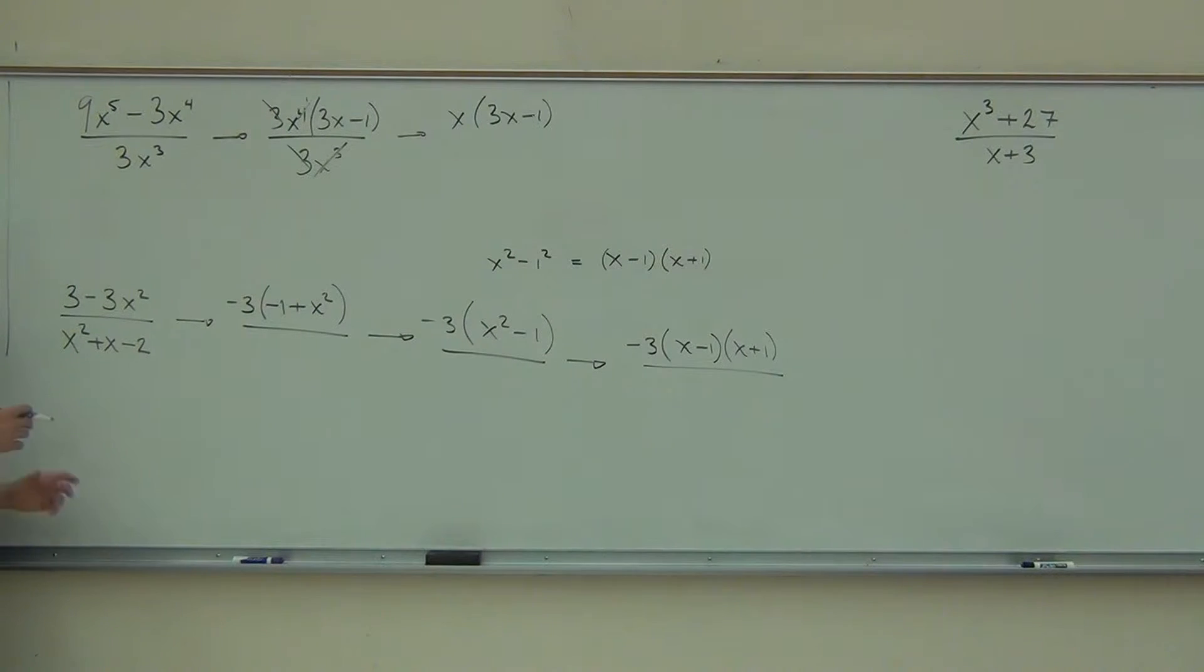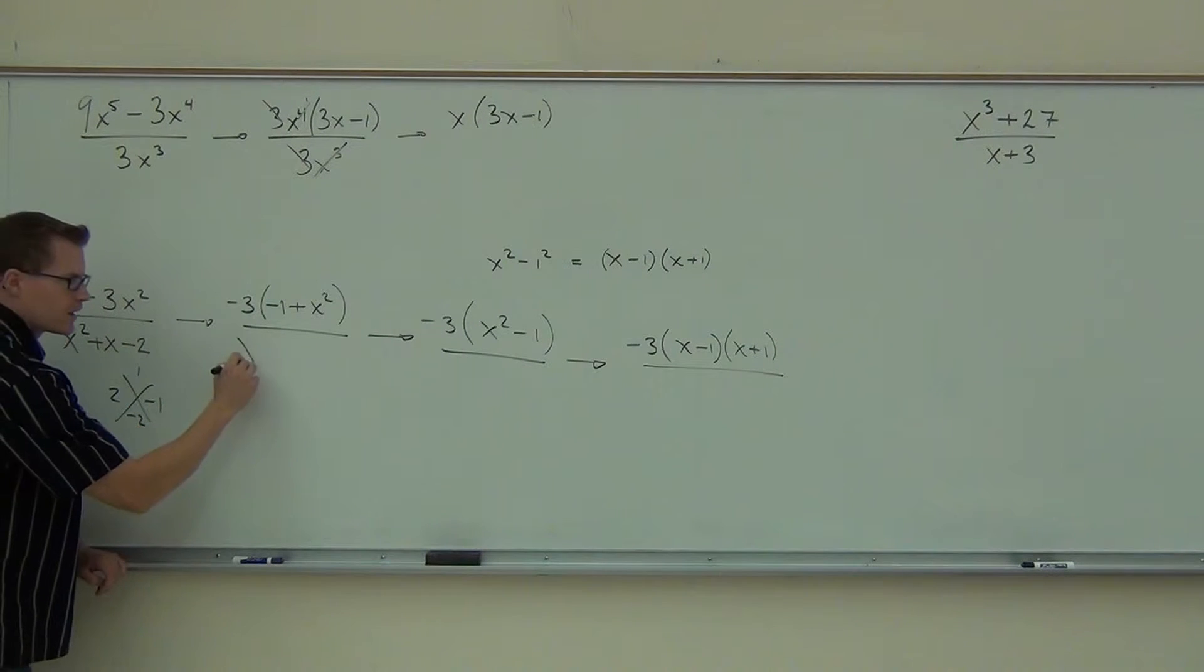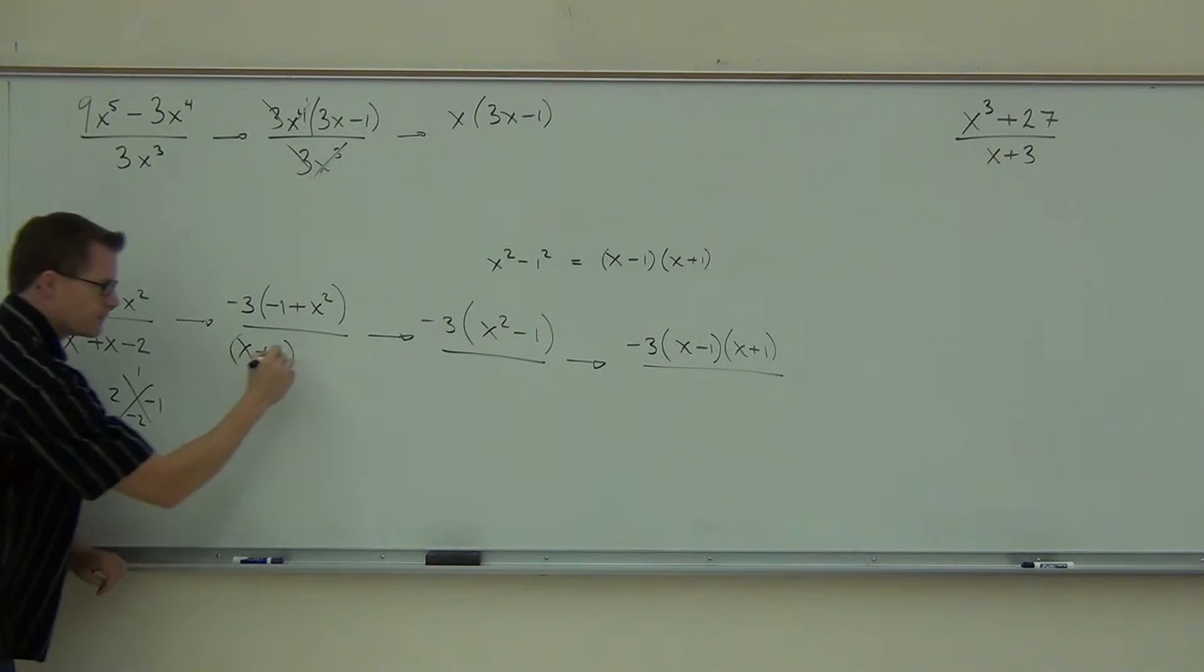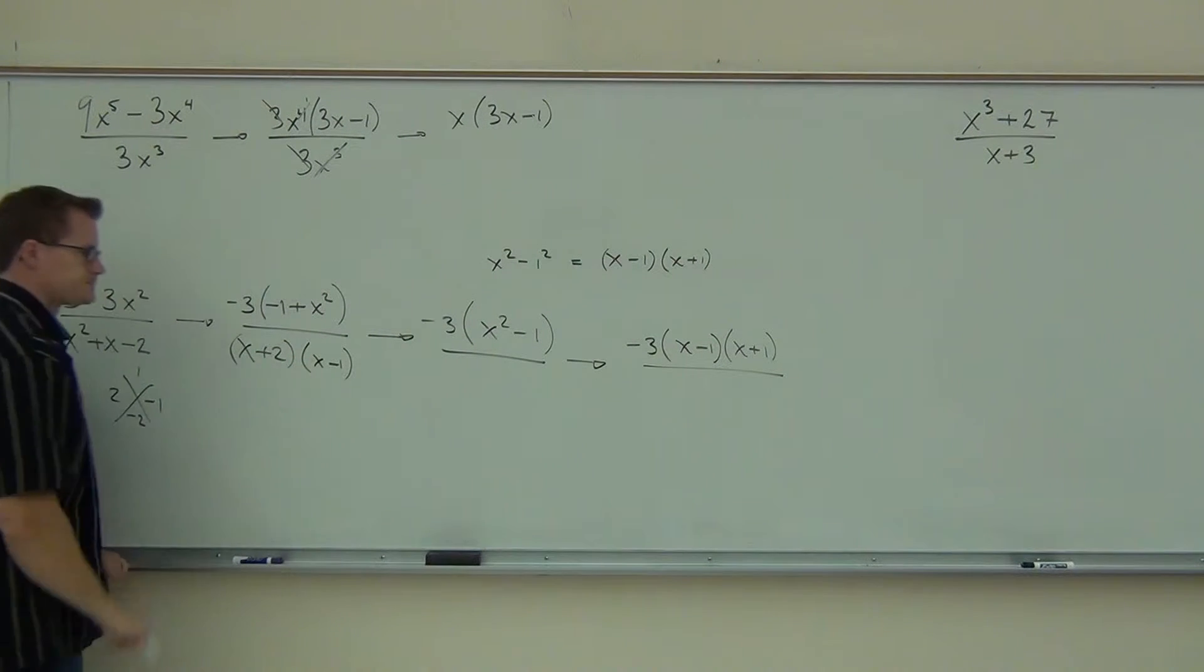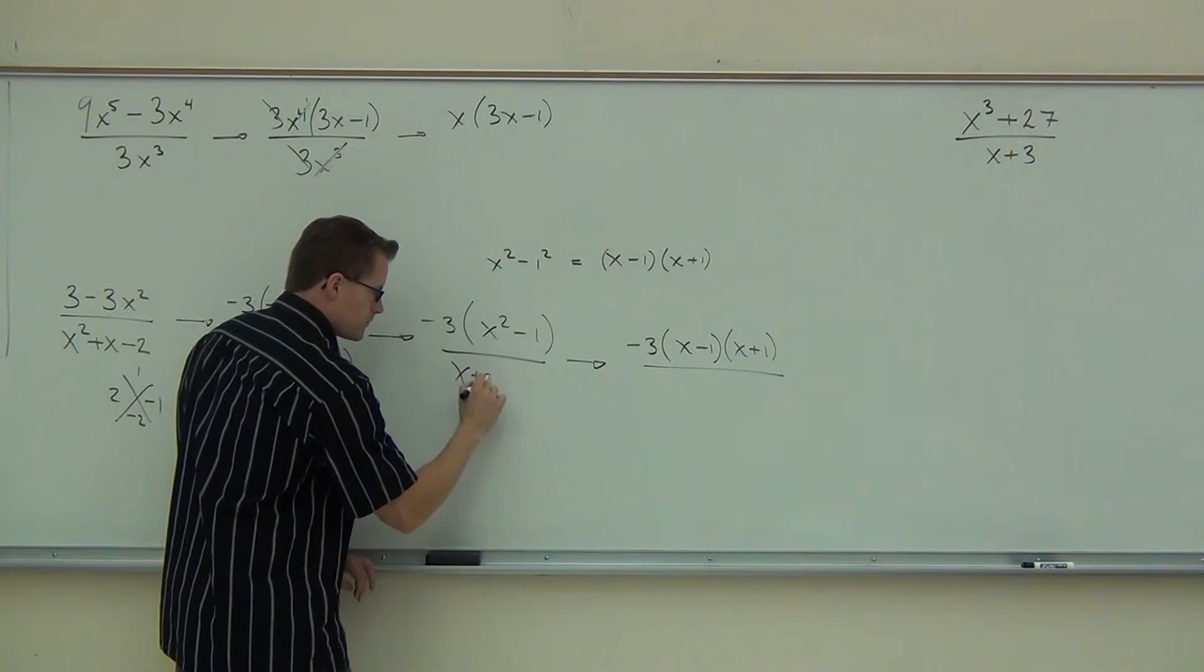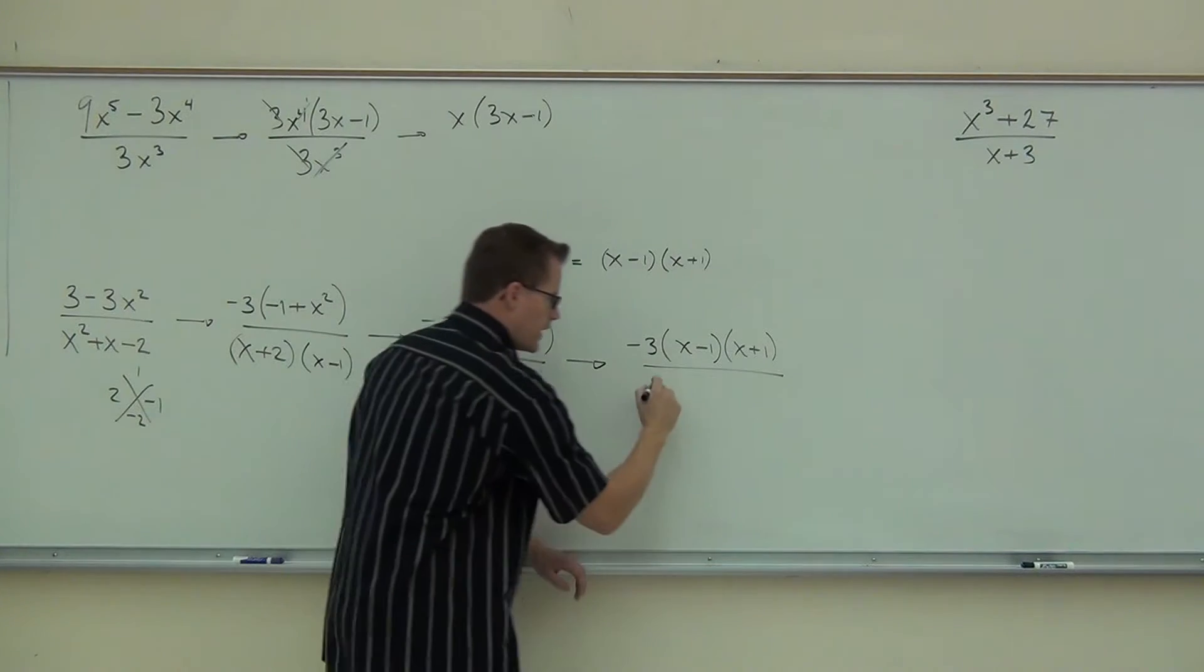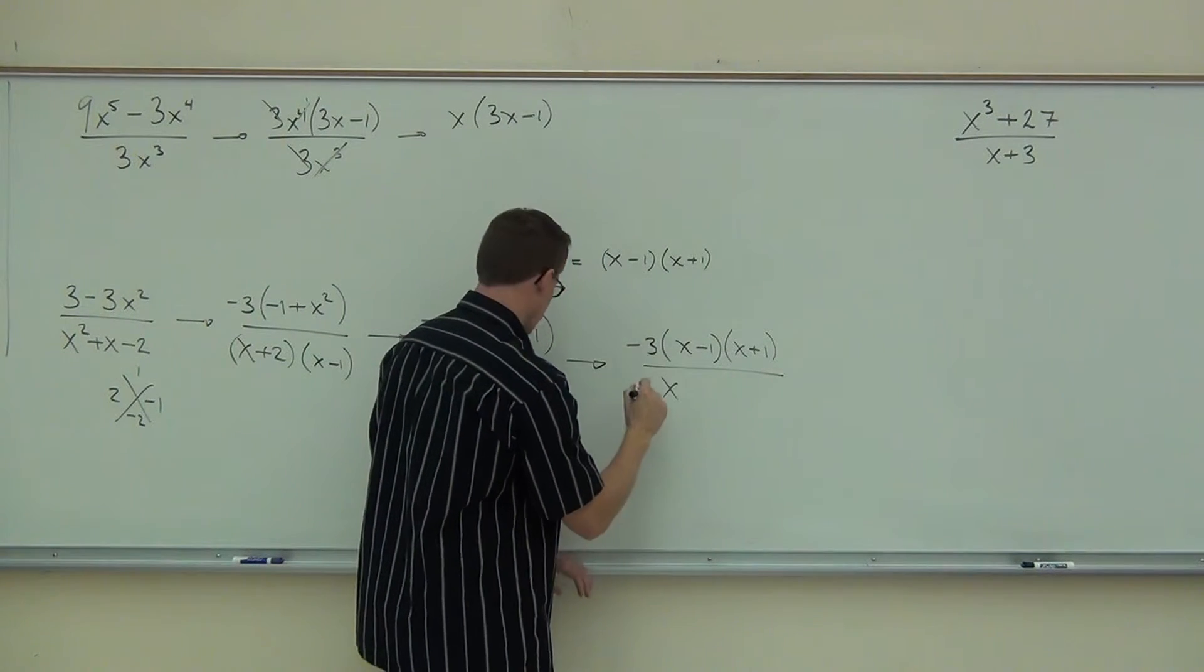We do this, we're completely factored at the top. On the denominator, we have a basic diamond problem. There's no number out front. We've got 1 and negative 2. The two numbers that I'm thinking of are 2 and 1 somehow. So we'll go directly to the factors. We don't need to factor by grouping because there's no coefficient out front.